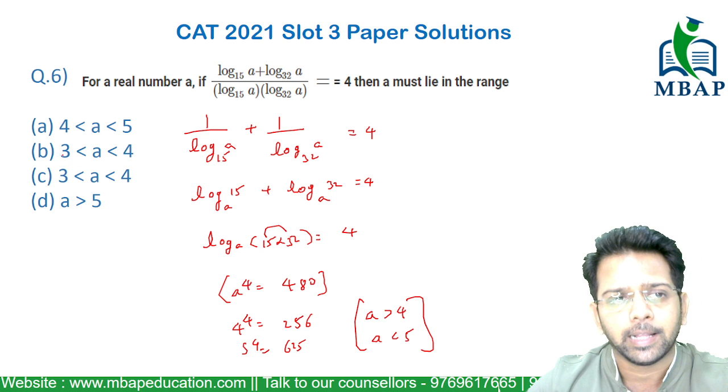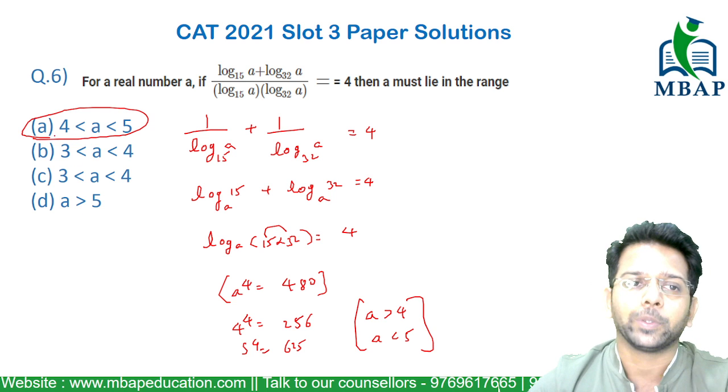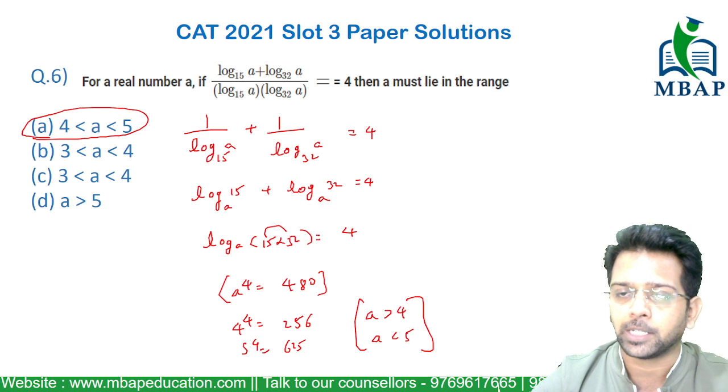So the value or the range of a seems to be option A, which is between 4 and 5, and that becomes my answer for this simple question.